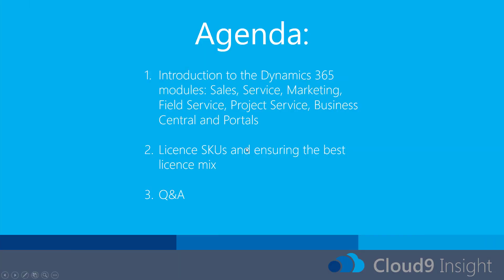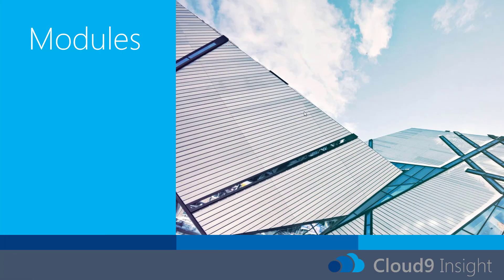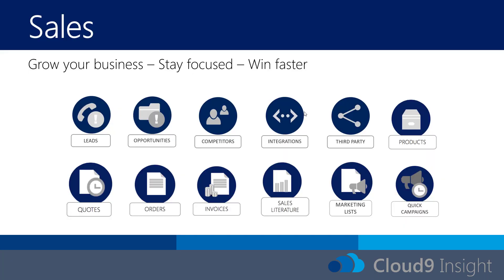We're going to be going through the agenda as you can see in front of you, which is the introduction to the core modules of Dynamics — sales, service, and the new marketing. We'll also cover at a high level field service, project service, and Business Central, and also just at a high level the portal license that you now get as part of a customer engagement plan. We'll also go through the license prices, the license SKUs, and we'll have some time at the end for a Q&A. So we'll start off at a high level going through the modules.